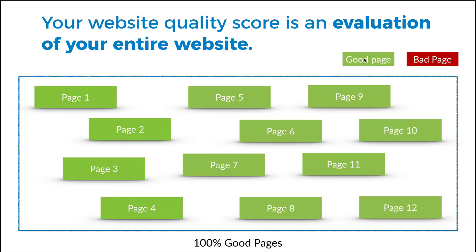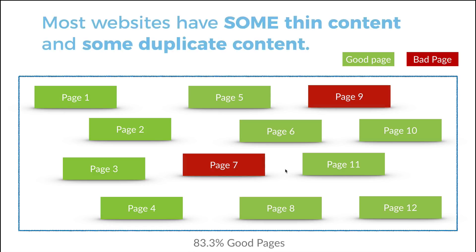If all your pages are good — all green, good pages — then you have 100% good pages on your website. Google is going to look at your site and say, 'This is a really good website, let's rank this and send them a bunch of traffic.'